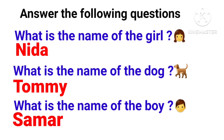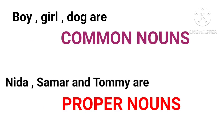So, what have you understood from these questions? Boy, girl, dog are common nouns because they do not represent any specific name. Have you ever heard anyone call you 'Girl' as your name? No, it does not work that way.